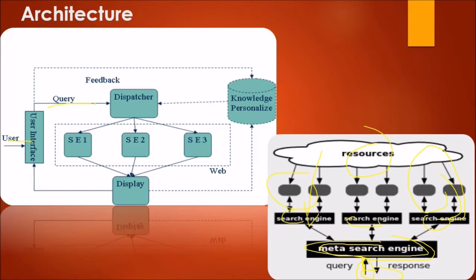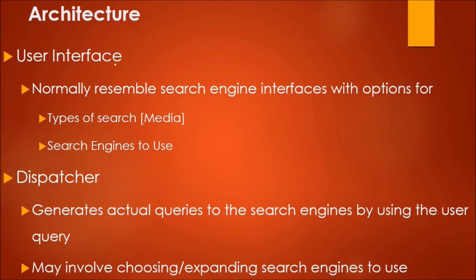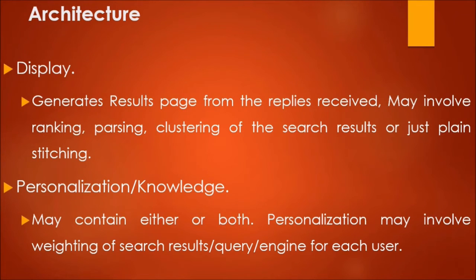The architecture includes: a user interface, a query component, a dispatcher, knowledge personnel, search engines 1, 2, and 3, a display component, and the web. The user interface normally resembles typical search engine interfaces with options for typing a search query and selecting which search engines to use. The dispatcher generates actual queries to the search engines using the user query, and may involve choosing and expanding the search engines to use. The display generates the result page from the replies received, and may involve ranking, parsing, clustering of search results, or plain stitching — depending on the algorithm the meta search engine uses.